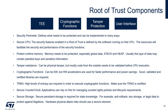Taking these four basic building blocks, we can now break down the basic components that put these blocks together. We have a security perimeter, defining what needs to be protected and what can be implemented in many ways. A secure CPU — the security features enabled in a root of trust are defined by the software running on that CPU, and the resources will facilitate the security and performance of the security functions.